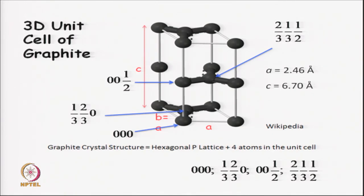This is the 3D unit cell of graphite: a hexagonal primitive lattice with four atoms in the unit cell. This is the most complicated structure in terms of motif we have looked at so far. Although graphite's structure is conceptually simple, describing it in terms of lattice and motif requires a four-atom motif — more complicated than simple hexagonal with one atom per lattice point, and different from hexagonal close-packed which has two atoms per lattice point.